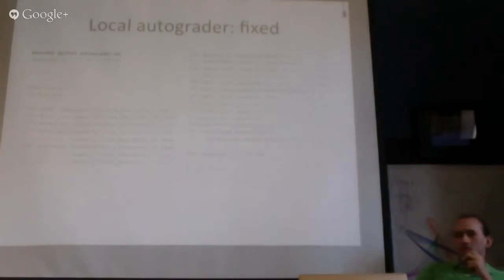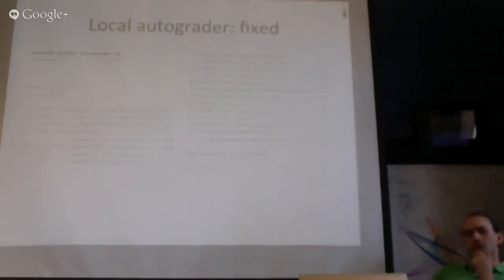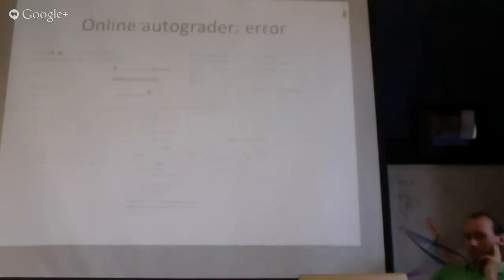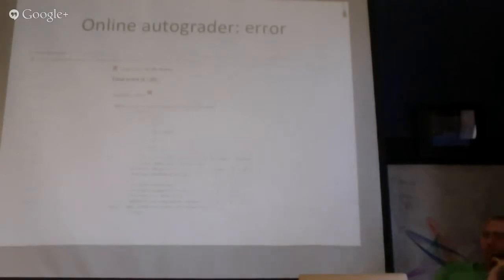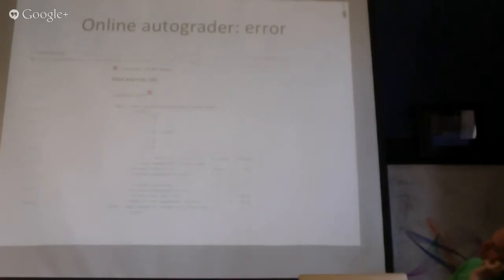The student experience is running the autograder repeatedly on the command line, figuring out why tests failed, and getting a grade. The online version has exactly the same code, just displayed in a slightly different fashion. Here's a different test case: the student wrote some code and it says 'your search failed on this specific ASCII graph — here's what the solution output, here's what it should have output, go figure out what was wrong.'